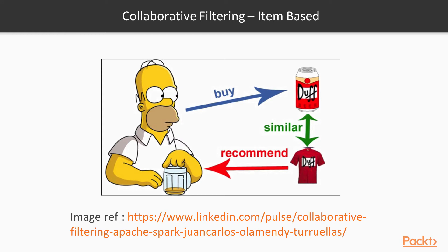Item-based filtering is a bit different. Let's say I bought a can of Duff — what the item-based filtering algorithm will do is recommend similar items based on that purchase. So because I bought this can of Duff, it's going to recommend me a similar item, for example a Duff t-shirt. The system recommends based on the item I bought.